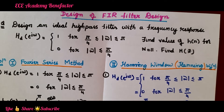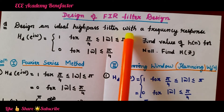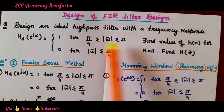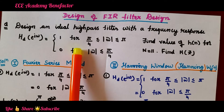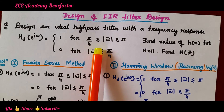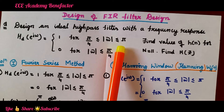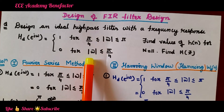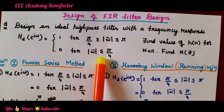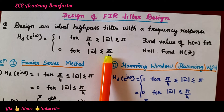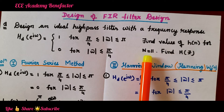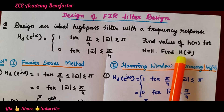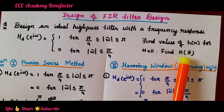Let us start the problem. Design an ideal high pass filter with a frequency response H_d(e^jω) equal to 1 for π/4 ≤ |ω| ≤ π, and 0 for |ω| ≤ π/4. Find the value of h(n) for N equal to 11 and find H(z), the transfer function of the filter.